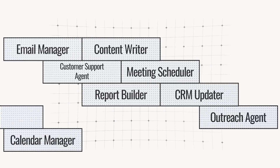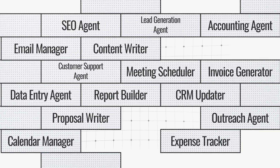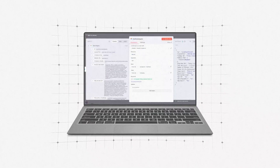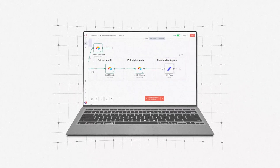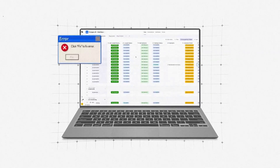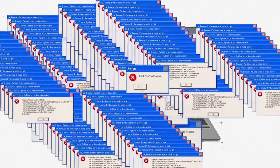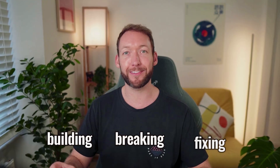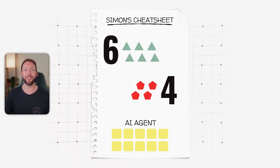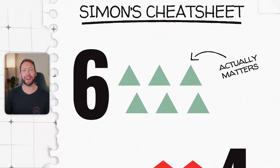I've built out hundreds of AI agents and in the next few minutes I'll show you what most people never explain to you when you're starting out. If you don't understand this now, you will waste weeks building systems that look impressive on your laptop but can't actually handle real customer data. So after 18 months of building, breaking and fixing these agents continuously, I'm going to give you the cheat sheet — the six things that actually matter.